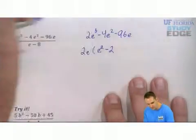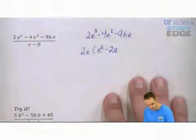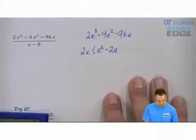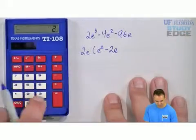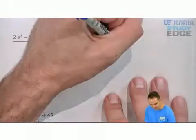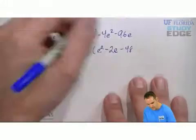Negative 4 divided by 2 is negative 2. Take 1 out. Negative 96 divided by 2. 96, make it a negative. Divided by 2 is negative 48. And the e was taken out.